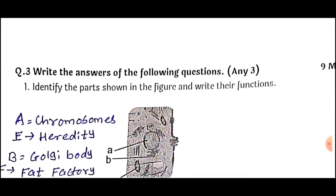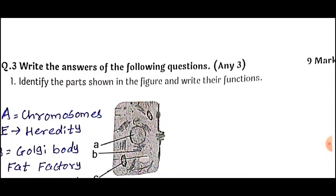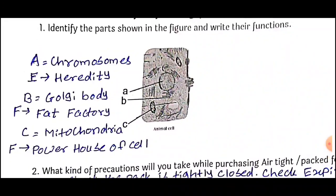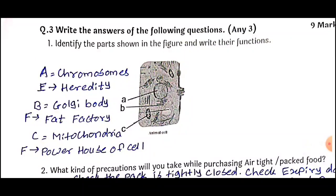We are going to continue with Question Number 3: Write the answer of the following questions — any 3 for 9 marks. Question Number 1: Identify the parts shown in the figure and write their functions. The figure is of animal cells. Point A is chromosomes — function: heredity. Point B is Golgi body — function: fat factory. Point C is mitochondria — function: it works as the powerhouse of the cell. Please see the diagram carefully and answer very carefully.